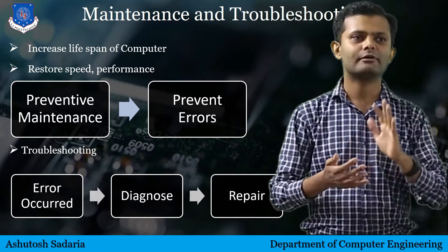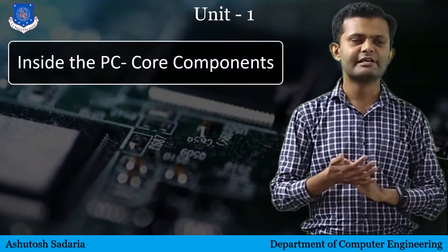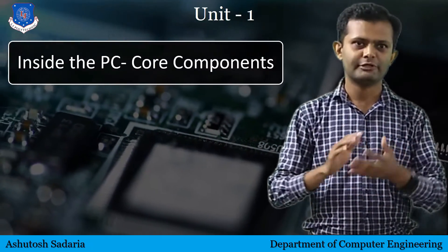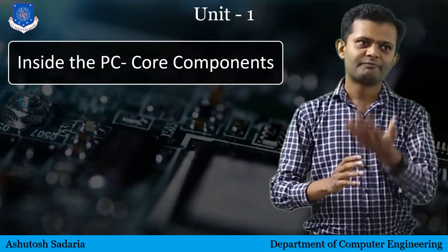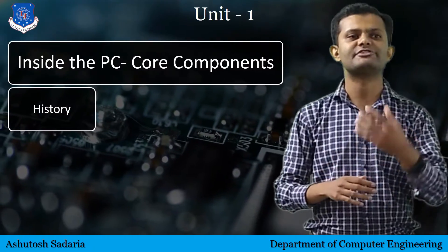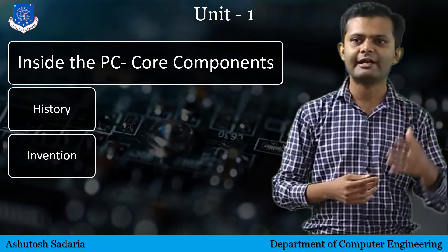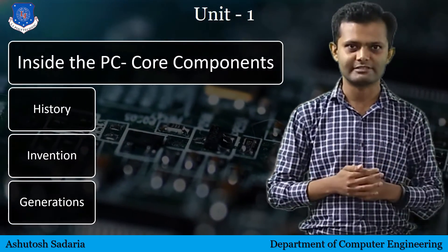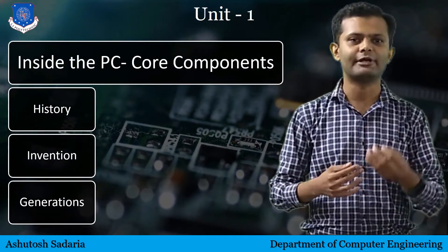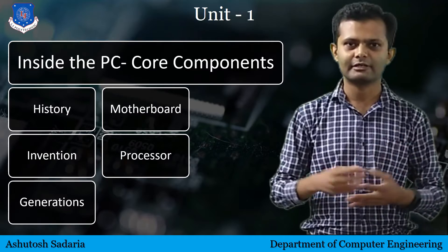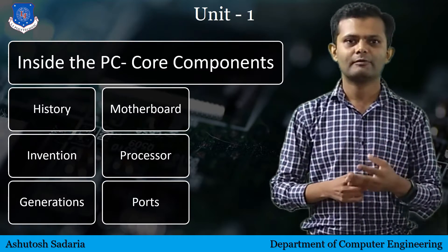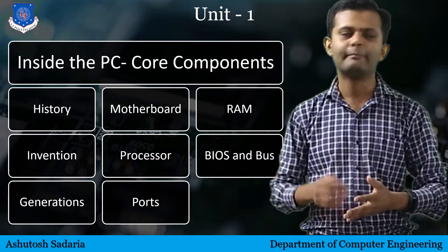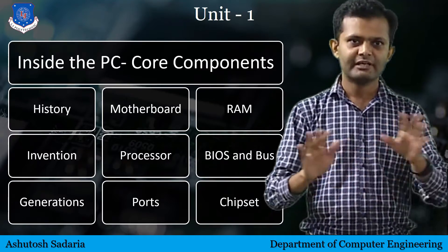First of all, I am going to tell you about the different units of the subject. The first unit is inside the Computer's Core Components. Before we learn about Core Components, we are going to learn about the history of the Computer — when the Computer was invented, how many generations there are, and what are the differences between those generations. Then we will learn about different components like Monitor, Keyboard, Mouse, Processor, Motherboard, and other components. Then we are going to learn about Ports available in your Computer, and about components in detail like Motherboard, CPU, RAM, BIOS, Bus, and Chipset. That's our first unit.